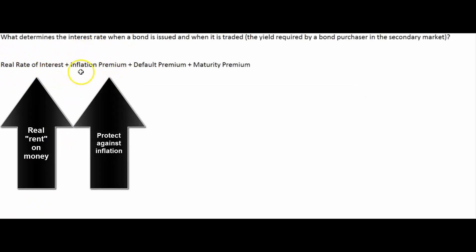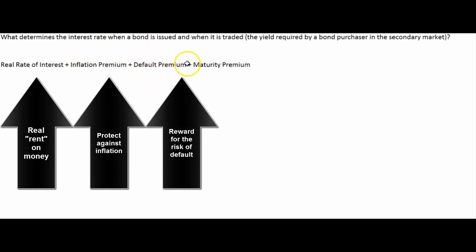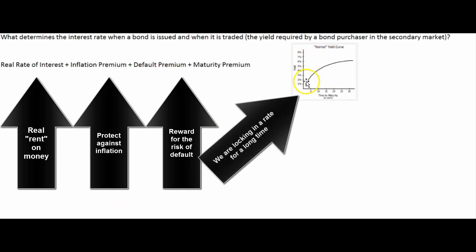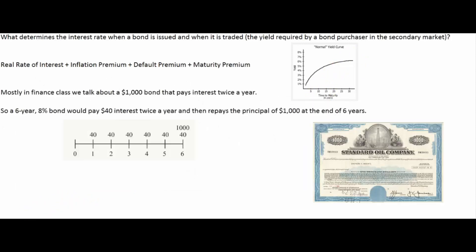To the real rate we add an inflation premium, since investors anticipate a certain amount of inflation over the life of the bond. We also add a default premium — if the lender thinks they might not get paid, they want a higher premium. Then there's a maturity premium: the longer the bond is outstanding, the more risk the investor carries, so the longer the loan the higher the required interest rate. This is called the yield curve — borrowing for five years might cost around three percent, but borrowing for thirty years might be around six percent.